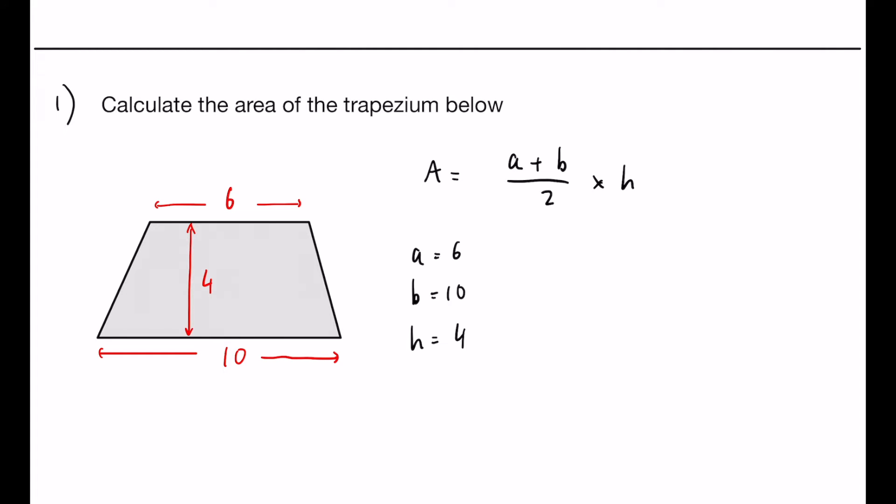So we just sub it in. So a plus b is going to be 6 plus 10 divided by 2 multiplied by the height which is 4. 6 plus 10 makes 16, divide that by 2 multiplied by 4. 16 divided by 2 is 8, multiply that by 4 we're going to have 32, and again assume it's centimeters, we can say centimeters squared.